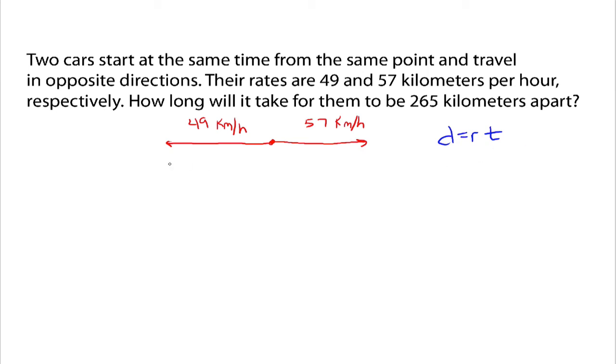So, this part right here, if you're going 49 kilometers per hour, then the distance, D, is equal to 49T. Everybody with me on that?